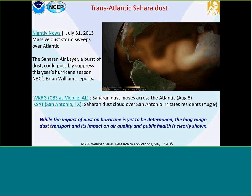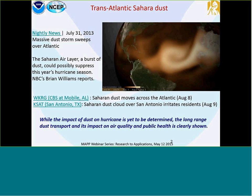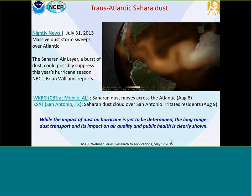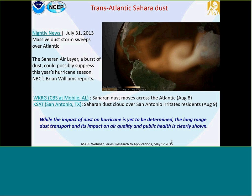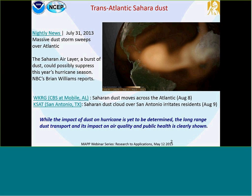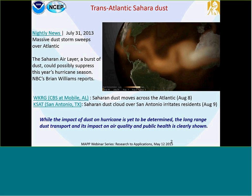This is an animation from this model that was shown in 2013 late summer in the national news to talk about the Saharan air layer. This same event was reported on local news later in the week to talk about the impact on air quality and the increased number of people getting sick during asthma attacks. In Brian Williams' report, he linked the dust with the suppression of hurricane season. The long-range dust transport and its impact on air quality and public health is clearly shown.